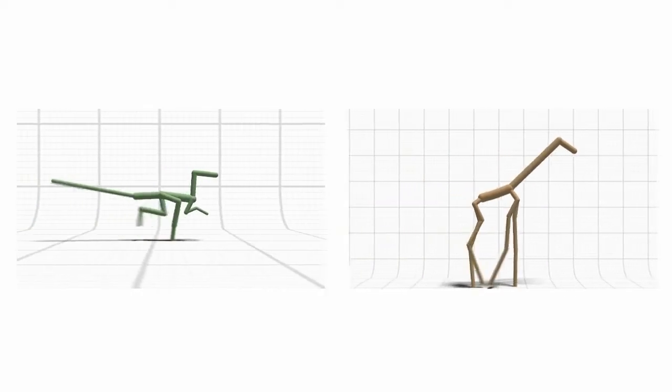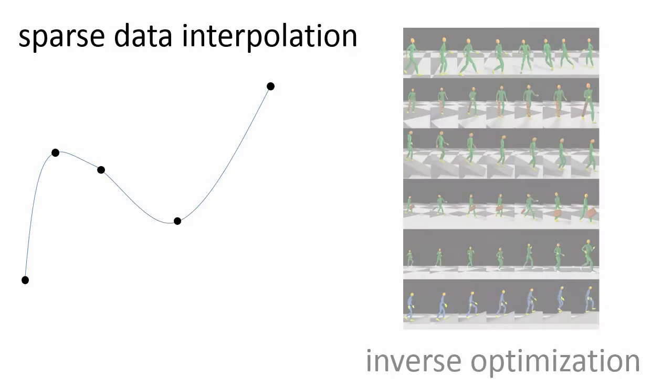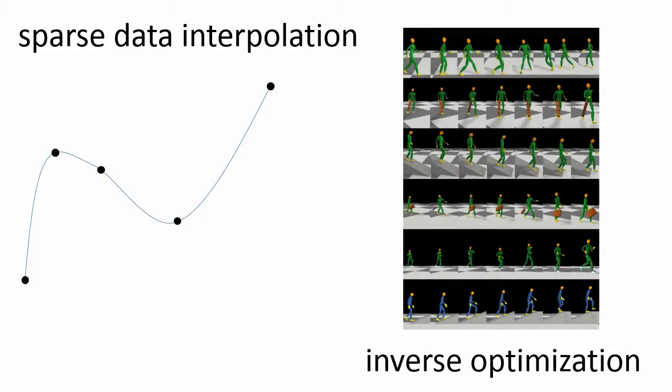We're going to achieve this by combining two different ideas. The first is sparse data interpolation — essentially looking at animals for which we do know how they move and extrapolating their motions onto a new animal where we don't have video data. We're going to combine this with an approach known as inverse optimization, which turns out to be very useful in making the sparse data interpolation actually work well.